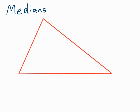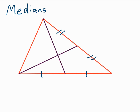Now let's draw the three medians of a triangle. The median goes from a vertex to the midpoint of the opposite side, so the opposite side is cut into two congruent halves. Drawing the next one, that segment is cut in half, and the third one cuts the third side into two congruent halves. The center created by the medians is called the centroid.